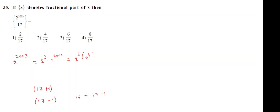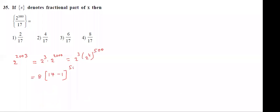So 2 power 4 whole power — how much? 500. Now 2 cube means how much? 8. So 8 into 2 power 4 is 16, and 16 means I'm writing (17 minus 1) whole power 500.